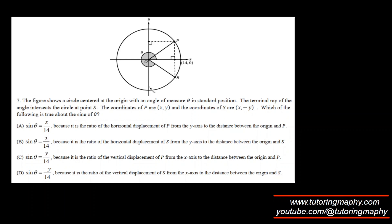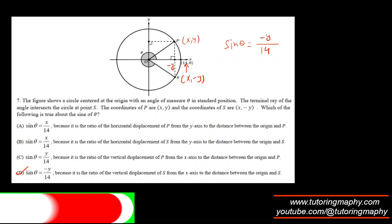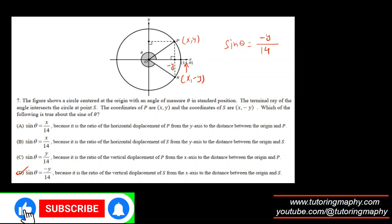Similar arrangement — this is theta, and they are asking what is sine of theta, except in terms of x and y. The hypotenuse is 14. Sine theta is opposite over hypotenuse, and hypotenuse is 14. For P, coordinates are x, y. For S, coordinates are x, negative y. So the opposite has to be this height, which is negative y. So sine theta is negative y over 14, which is option D.